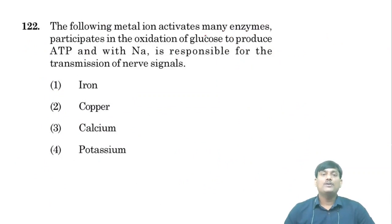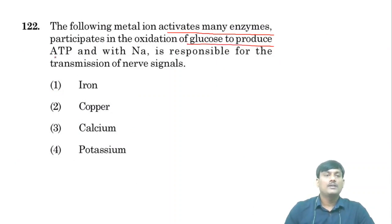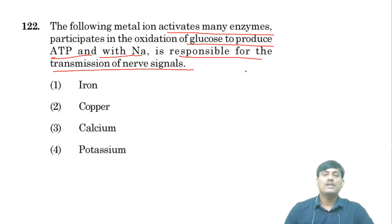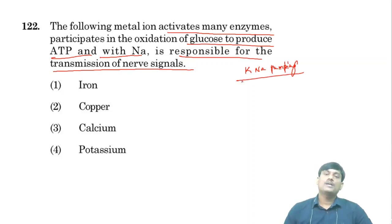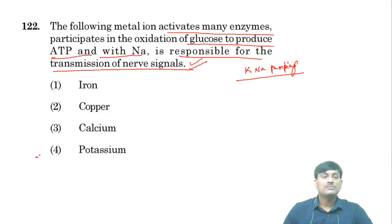The metal ion that activates many enzymes, participates in the oxidation of glucose to produce ATP, and together with sodium is responsible for the transmission of nerve signals is potassium. Potassium–sodium pumps transfer potassium and sodium through the cell membrane, generating nerve signals. Potassium is the correct answer.